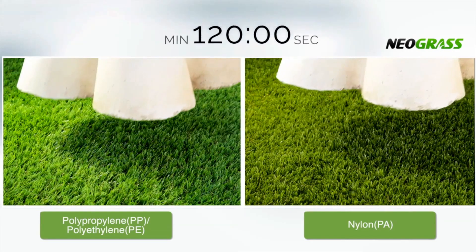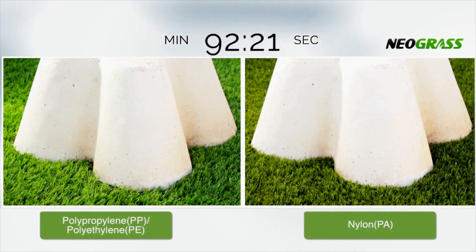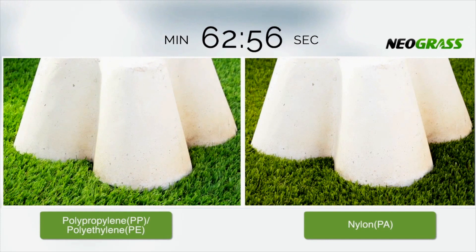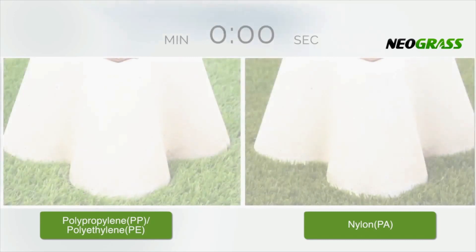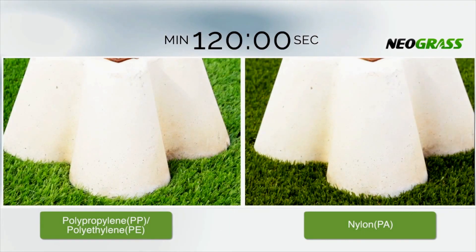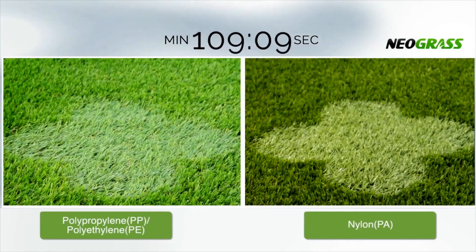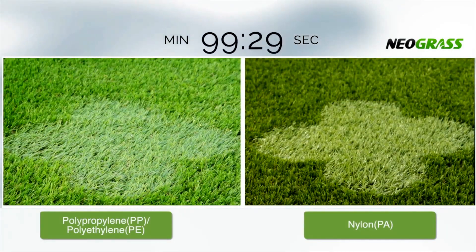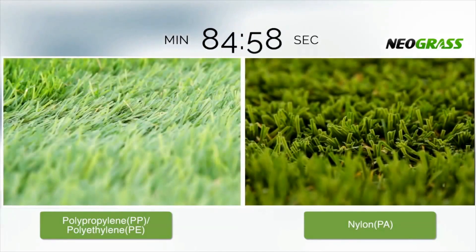Heavy objects like garden furniture can damage artificial fibers. However, here you can see that the nylon lawn on the right recovers from the heavy object without causing any damage to the grass. The polypropylene grass on the left doesn't recover in the same way and can result in permanent damage to the fiber. This is what causes an artificial lawn to look flat over time.